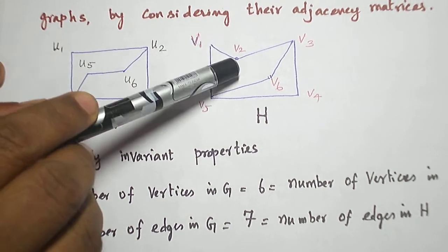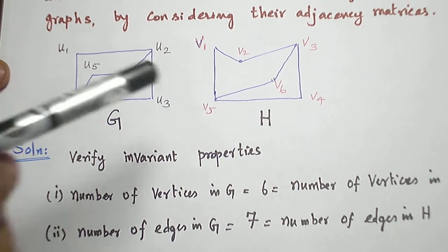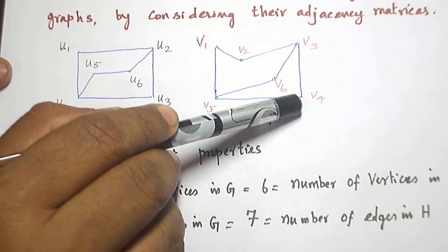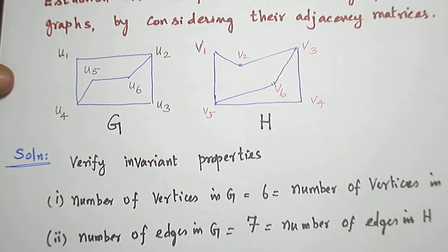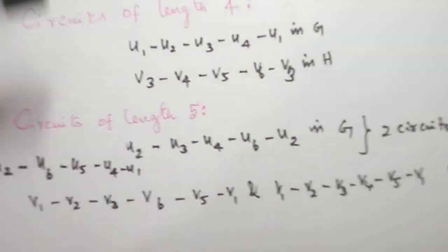Similarly, here also. This is one circuit. And this is another circuit. So, both graphs have two circuits of length five.